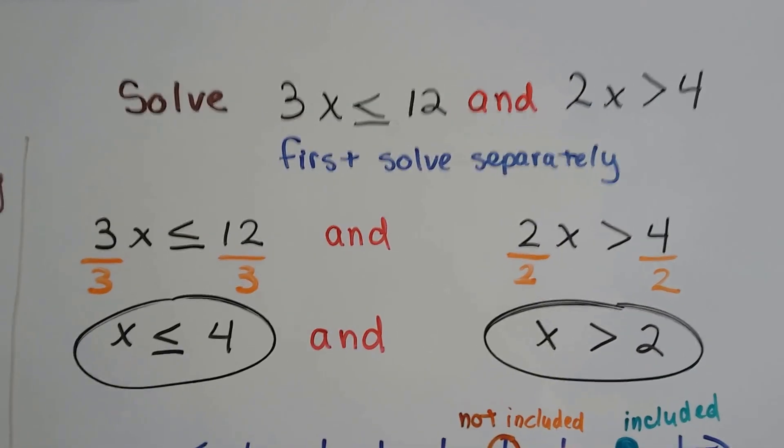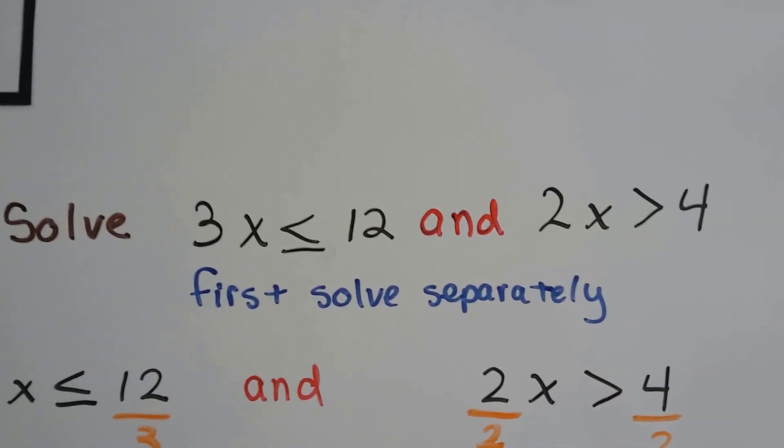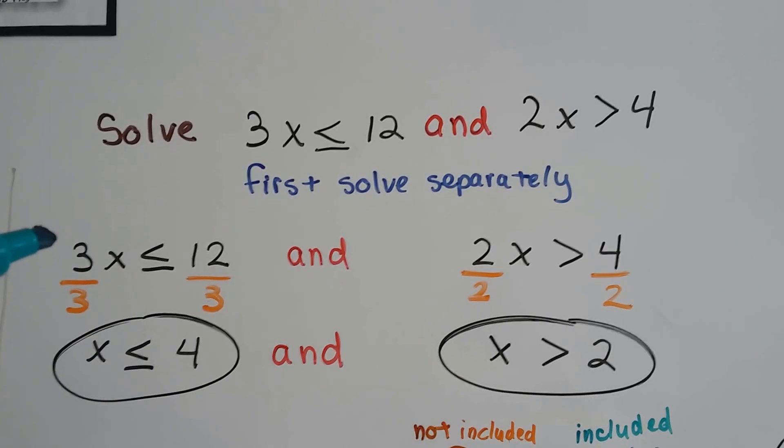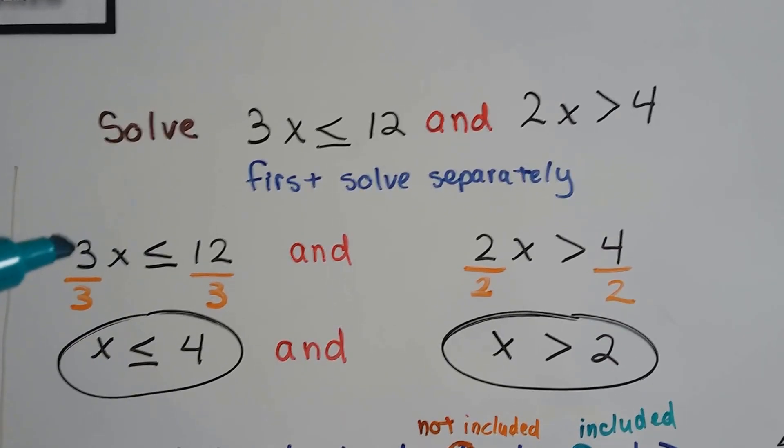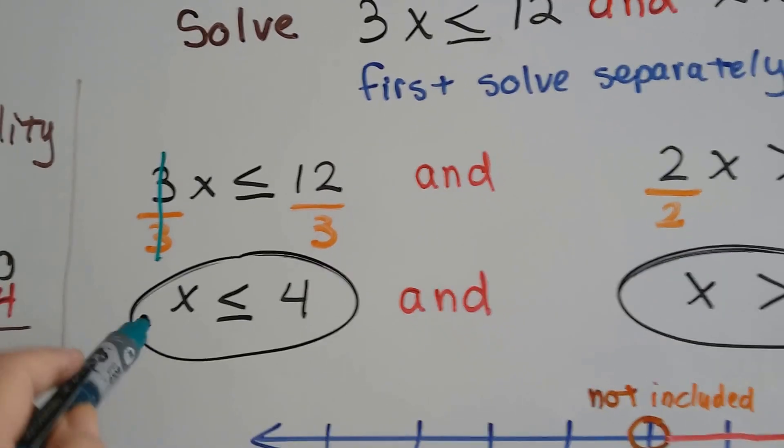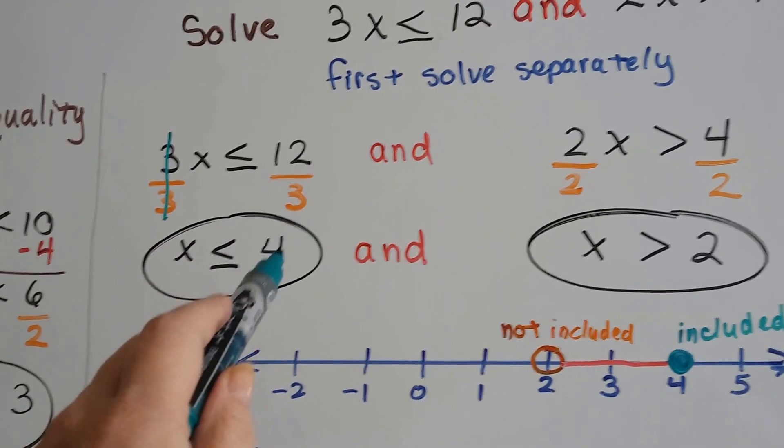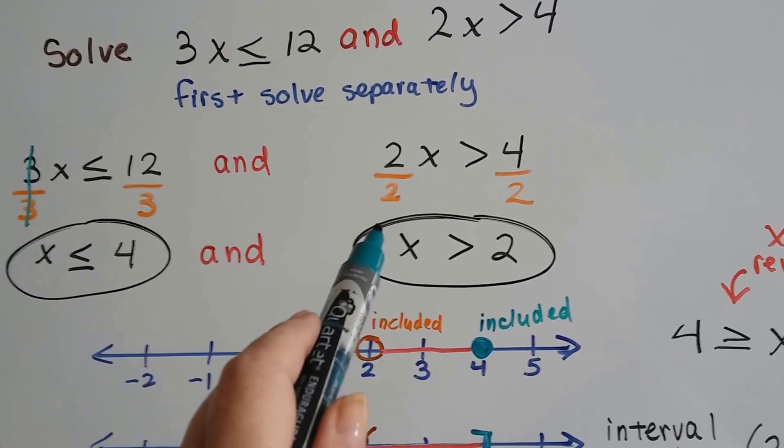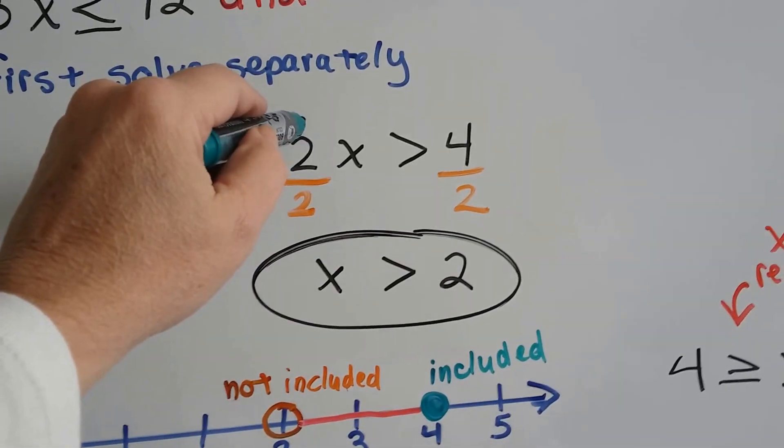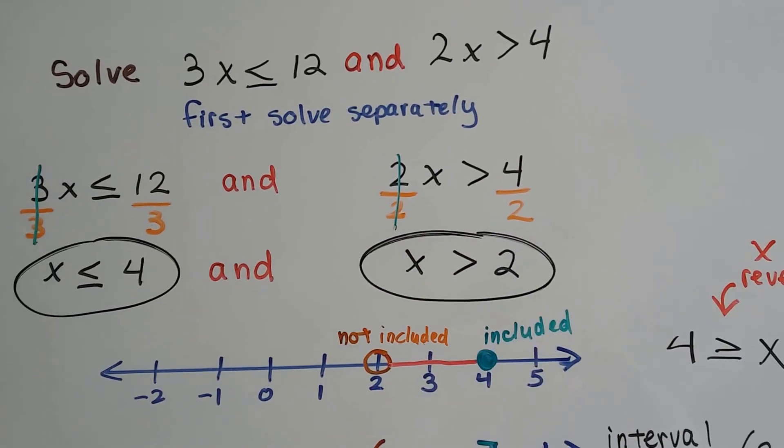Now it says solve 3x is less than or equal to 12 and 2x is greater than 4. So first we solve them separately. This is going to be easy because all we have to do is divide each side by this 3 coefficient to get our buddy the invisible 1, and we get x is less than or equal to 4. And on this side, we divide each side by this coefficient 2 and identity property, get our friend the invisible 1, and we get x is greater than 2.